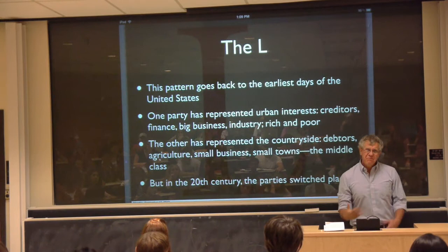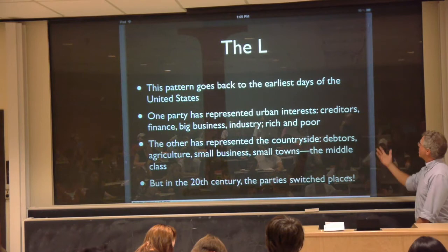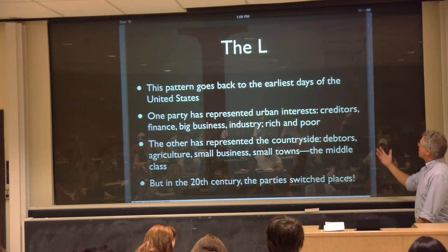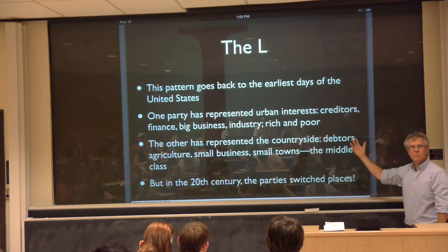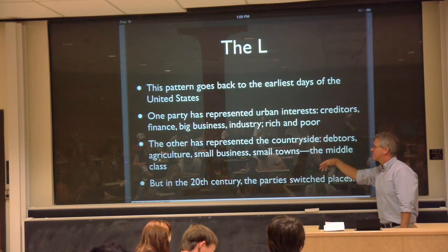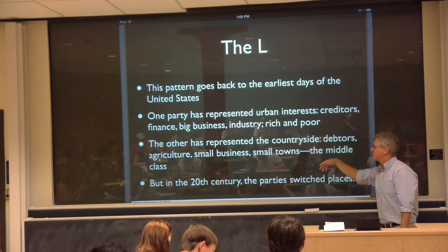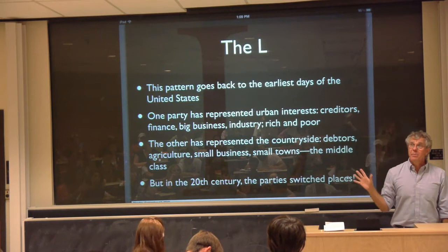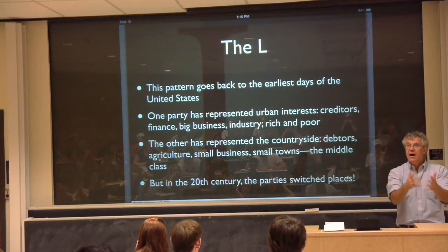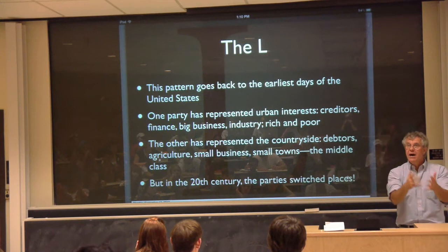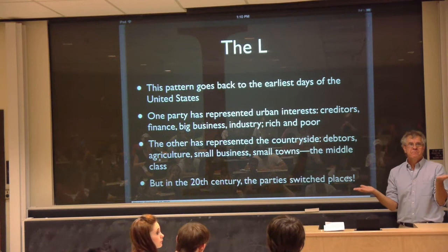This pattern goes back to the earliest days of the United States. Roughly speaking, one party has represented urban interests — creditors as opposed to debtors, finance, big business, large industry, but also the urban poor. So one party represented sort of the rich and the poor together. The other party represented the countryside — areas outside large cities — so debtors, agriculture, small business, small towns, and in some ways the middle class. One party is strongest in large cities and on the coasts; the other is stronger in small towns and the countryside. That basic divide persists across all the party changes.